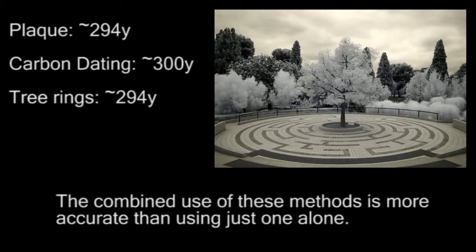It's known that he died in May of 1705, thus validating, independently of radioactive decay, that the tree is about 300 years old. Finally, let's take a look at dendrochronology, or using tree rings to date it. This independent method arrives at the tree being 294 to 295 years old, thus validating yet again that the tree was planted in roughly 1705.